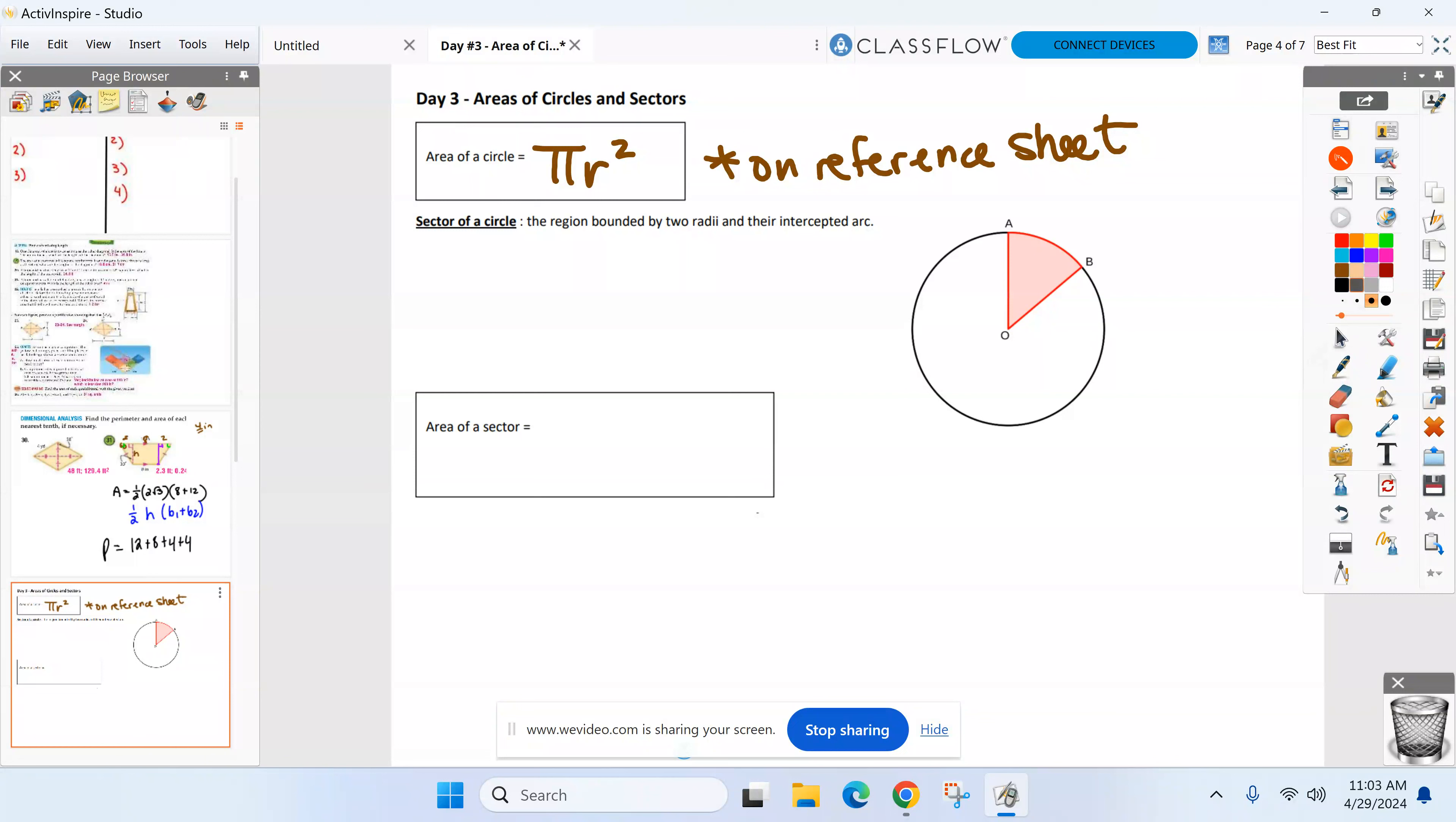Anyway, that's what you can think of the sector as, right? Slice of pizza. Two radii and an arc that connects it. I want you to find the area of this region. That's what we're going to do today, find the area of that sector.